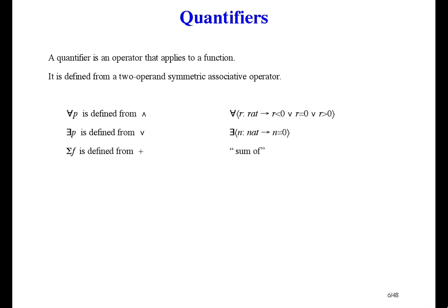The Greek capital sigma is the summation quantifier. It applies to functions that have a numeric result, and its result is numeric. The result can be thought of as applying the function to all its domain elements and then adding all those results together. Here's an example: the sum as N varies over NAT plus 1, of 1 over 2 to the N. That's a half plus a quarter plus an eighth and so on, and the result is 1.